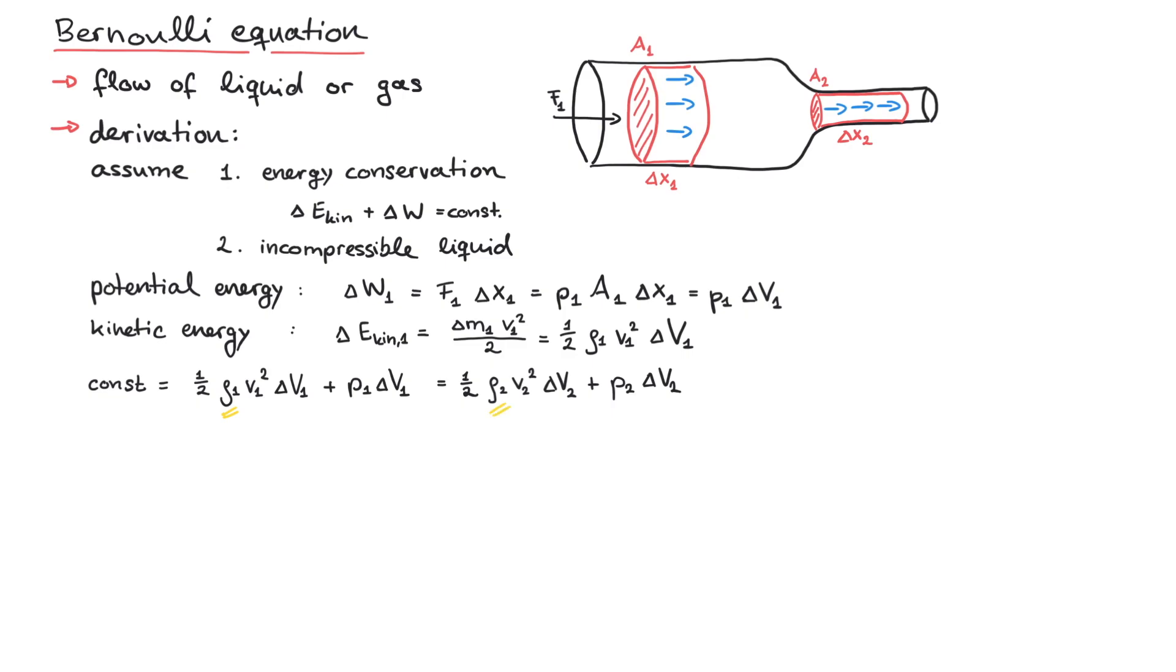Because we assume the liquid to be incompressible, the densities rho1 and rho2 are actually equal and we can simply write rho. The same holds for delta V1 and delta V2. The volume of an incompressible fluid cannot be compressed. This further simplifies the equation and we arrive at the Bernoulli equation.